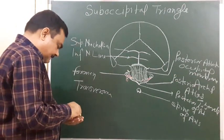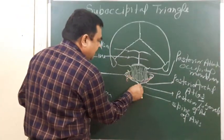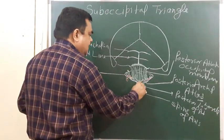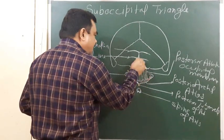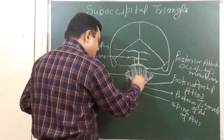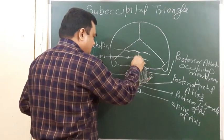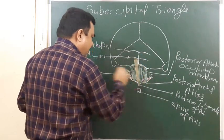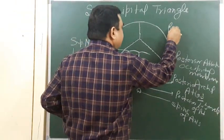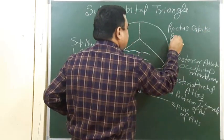From the posterior tubercle of the atlas, a muscle takes origin and is inserted below the inferior nuchal line. This muscle is the rectus capitis posterior minor muscle.